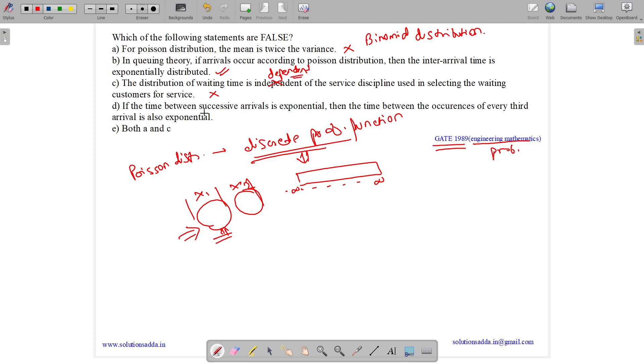If the time between successive arrivals is exponential, then the time between the occurrences of every third arrival is also exponential. This is also true. So the statements which are false are A and C, and we need to tell which are false. So answer is option E. Both A and C are false.